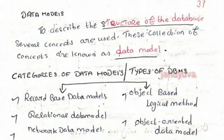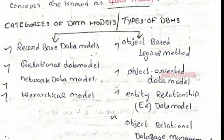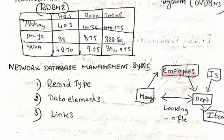The record-based model has three types: relational data, network data, and hierarchical. Looking at the relational data model — there are three employees with working hours, and we calculate the total. It is called a relational database.